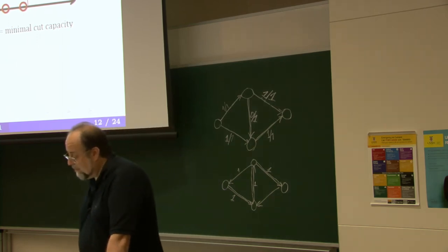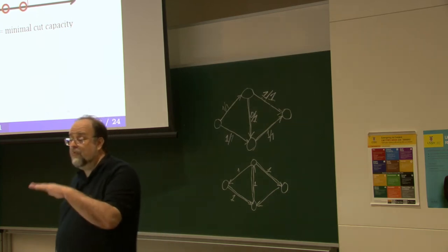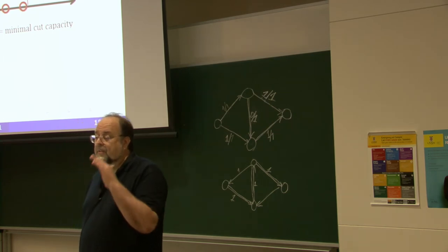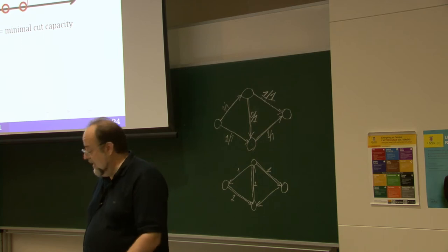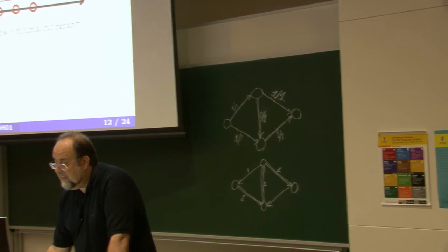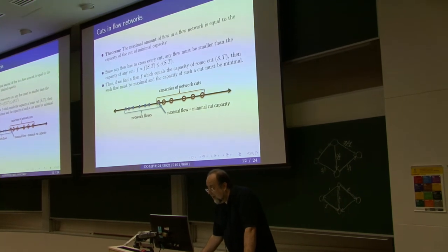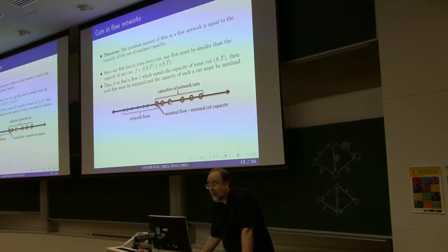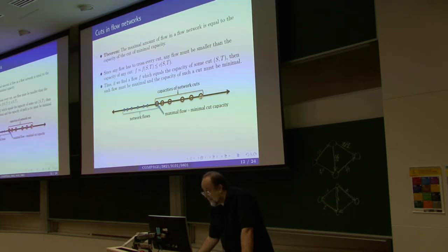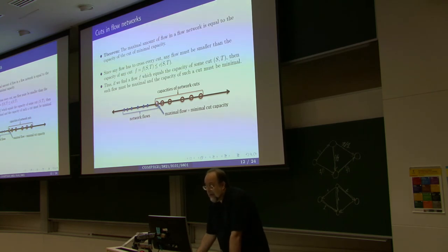We proved that when Ford-Fulkerson terminates, the flow produced is equal to the capacity of the associated cut, but we didn't show that flow is the maximal possible. Every flow is less than or equal to the capacity of any cut, because every flow has to pass through all of these cuts. So all the cuts are above all possible flows. If you find a flow that hits the capacity of a cut, then this flow must be maximal and this cut must be minimal.